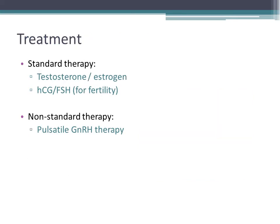Kallmann syndrome is treated by providing the patient with the absent hormones — testosterone in males and estrogen in females. For fertility, we treat with HCG and FSH, and after pregnancy occurs we can shift them back to testosterone or estrogen. The non-standard therapy, available in very limited centers, uses pulsatile GnRH therapy through a pump, which gets the pituitary to work and produce LH and FSH, and then the gonads also produce testosterone or estrogen.